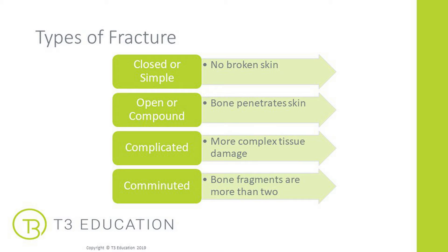Here are the main types of fracture. The first is a closed or simple fracture where there is no broken skin. An open or compound fracture is where the bone penetrates the skin, so there's a bony protrusion through the skin. A complicated fracture involves more complex tissue damage, which may result from a car or traffic accident. Finally, a comminuted fracture is where the bone breaks into more than two fragments — a more complex fracture.